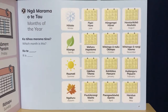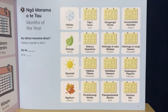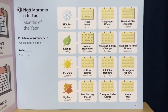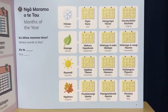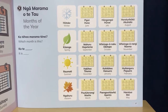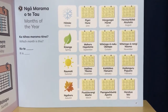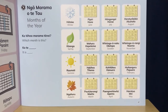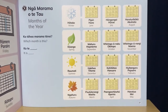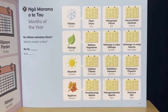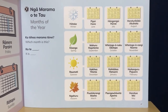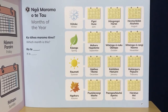And the last season is autumn: ngahuru. For March it's poututerangi and maihe. Here's a hard one for April: paingawhāwhā. Paingawhāwhā, and aperira. And the last month, May: haratua and mei.